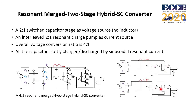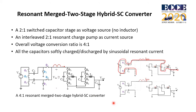This is an example of a merged two-stage hybrid switch capacitor converter with resonant soft-charging. The first stage is a 2-2-1 switched capacitor stage. The second stage is an interleaved 2-2-1 resonant charge pump as the current source. The overall voltage conversion ratio is 4 to 1. There are no decoupling capacitors between the two stages. The capacitors in the first stage, the second stage, and the resonant inductor form an LC resonant tank. In each operation stage, all the capacitors are charged and discharged by the sinusoidal resonant current.